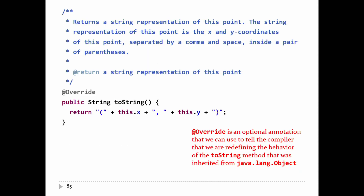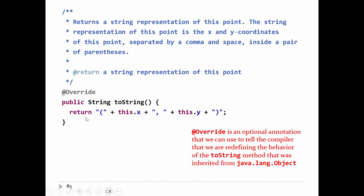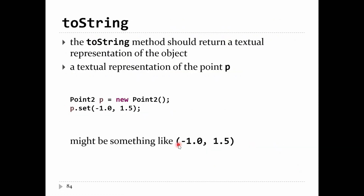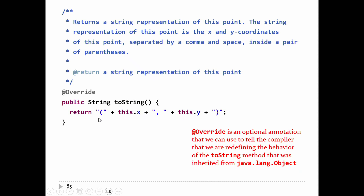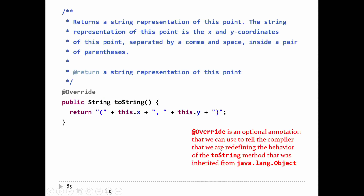If you want to put in a toString method, it is always public, always returns a String, its name is always 'toString' spelled exactly like that, and there's nothing inside the round brackets. Your job is to produce the string that corresponds to the point. I'd like the string to start with a round bracket and end with a round bracket, with the x-coordinate followed by a comma and a space, followed by the y-coordinate. So: open bracket + this.x + ', ' + this.y + close bracket.